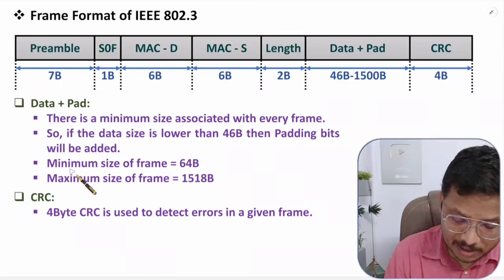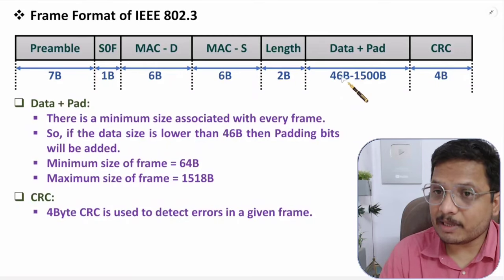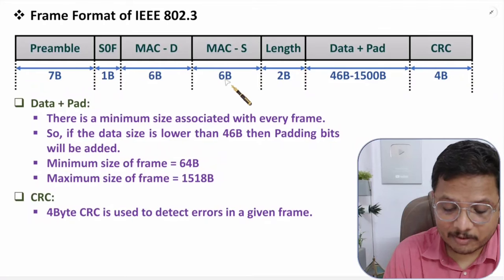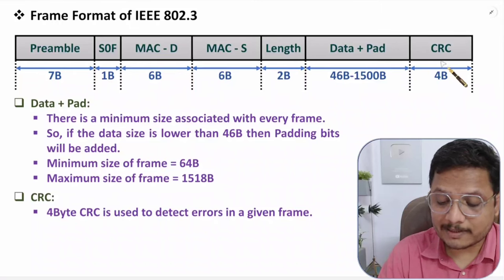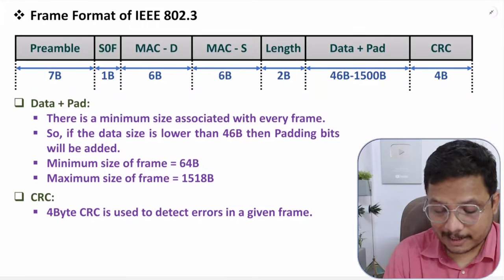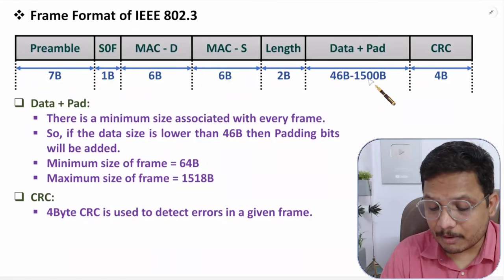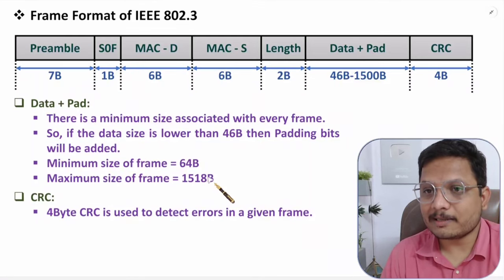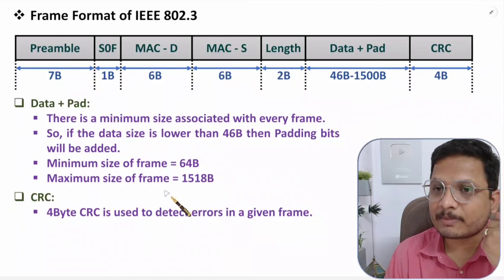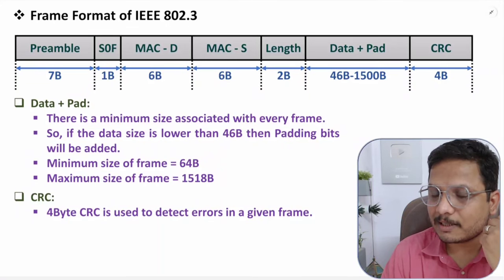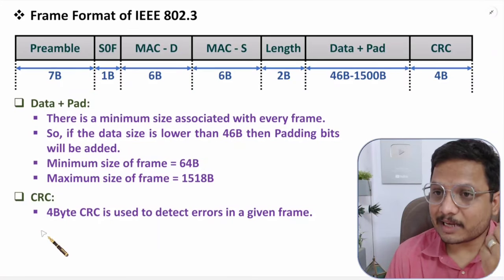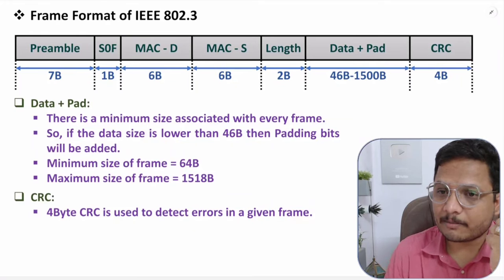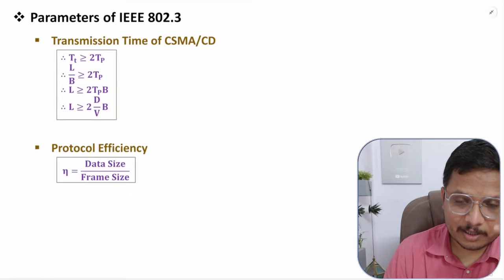The minimum frame size is 64 bytes: minimum data of 46 bytes, plus 6 + 6 = 12 bytes for MAC addresses, plus 2 bytes for Length, plus 4 bytes for CRC equals 18 bytes overhead — so 46 + 18 = 64 bytes. The maximum frame size is 1500 + 18 = 1518 bytes. CRC is 4 bytes and is used to detect errors in the entire frame.